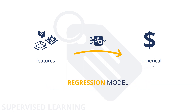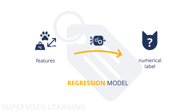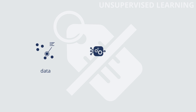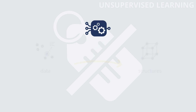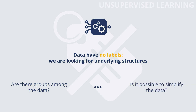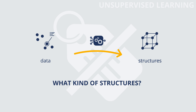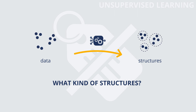Otherwise, we might want to define a model that predicts a category — like 'cat' or 'not cat' based on given features. In this situation we would talk about a classification model. In unsupervised learning, we want to define a model that reveals structures in data described only by their features, with no labels. Unsupervised learning algorithms can help answer questions like: are there groups among my data, or is there any way to simplify the description of my data? If the model tries to find groups among the data, we would talk about a clustering model.